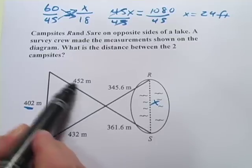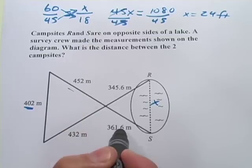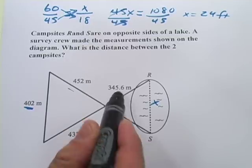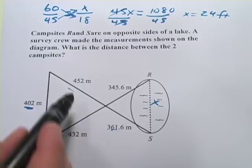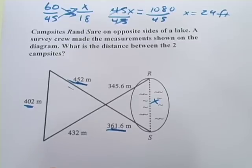And what you'll notice is that this side is longer, 452 versus 432, and this side is longer, 361.6 versus 345.6. So this side right here corresponds to this side. So be careful about that.